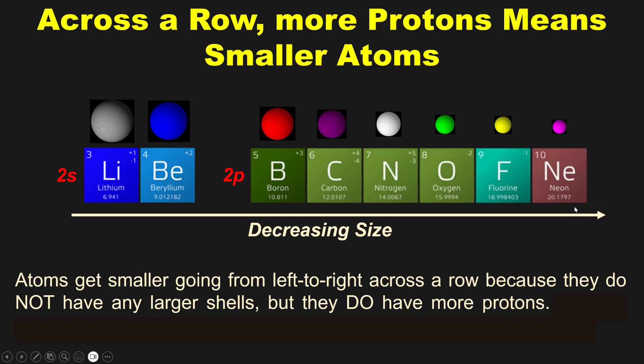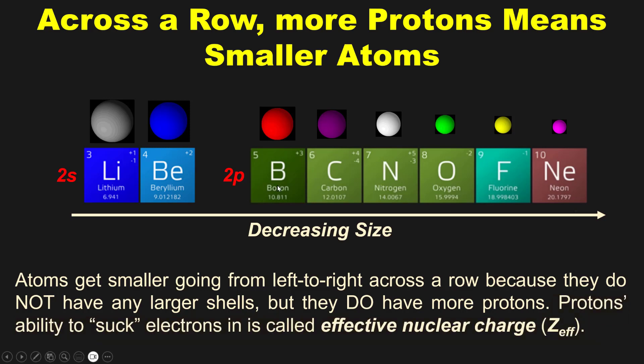And protons, which are in the nucleus and thus do not contribute in any way to the size of the atom itself because all of that is the consequence of the size of the outer cloud of electrons. But those protons do suck electrons in because they attract those electrons. Hence, every time you get one more proton, the electron cloud sucks in a little bit and makes the atom smaller.